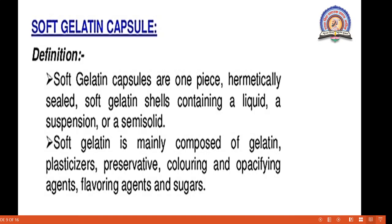Soft gelatin capsules are one piece, whereas hard gelatin capsules have two pieces — cap and body. In the soft gelatin capsule, only one piece is there. Hermetically sealed means completely closed. The soft gelatin shell contains a liquid, suspension, or semi-solid. While in the hard gelatin capsule we use a mixture of solids, in the soft gelatin capsule we use only liquid, suspension, or semi-solid material. This soft gelatin is mainly composed of gelatin, plasticizer, preservatives, coloring and flavoring agents, and sugars.